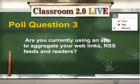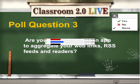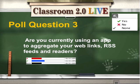Our last poll question: are you currently using an app to aggregate your web links, RSS feeds, and readers? That's kind of a curious question, but you're going to get some great ideas in a minute about using Symbaloo to do that. I've been using iGoogle, and I know we're going to lose iGoogle, so I'm really looking forward to hearing from Pam about how to get around that with Symbaloo. About 40% of the group here are using some kind of aggregator for their content.